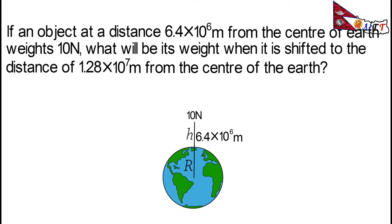In the first case, the distance from the center of the Earth is 6.4 × 10⁶ m. At that point, the object's weight is 10 N. In the second case, the distance is 1.28 × 10⁷ m, which is a much greater distance. Since force is inversely proportional to the square of distance, the weight will be lower at the greater distance.